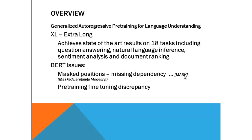Also, BERT assumes the predicted tokens are independent of each other given the unmasked tokens. But it does not happen in the real world. In natural language, words are dependent on the distant words in sentences. For example, when I am talking, I am making a context from the word which I uttered very early in the sentence. So that also creates an issue in BERT.